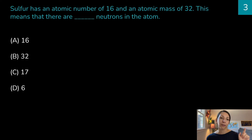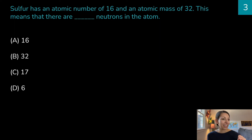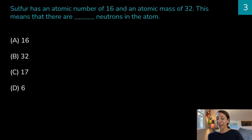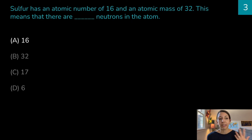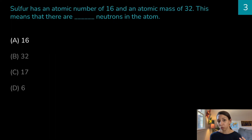Sulfur has an atomic number of 16 and an atomic mass of 32. This means there are how many neutrons in the atom? 16, 32, 17, or 6? The correct answer is 16. To find the number of neutrons, we take the atomic mass and subtract the atomic number: 32 minus 16 equals 16 neutrons. This happens to equal the atomic number in this case, but for an isotope it may not be the same, and as a result the mass would be different.